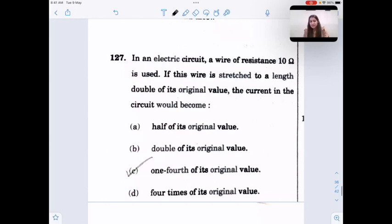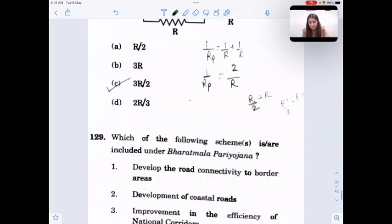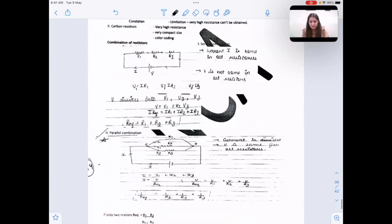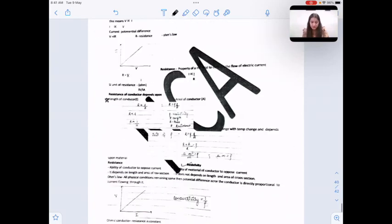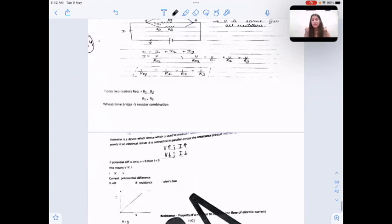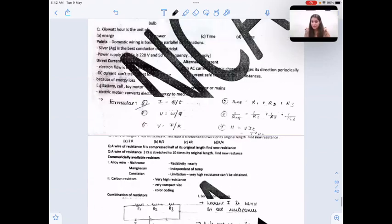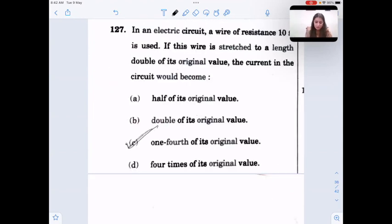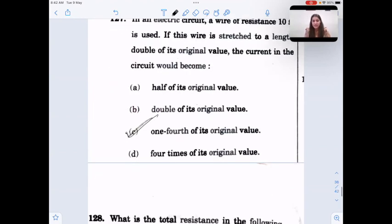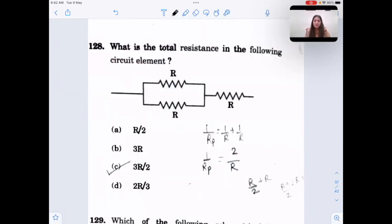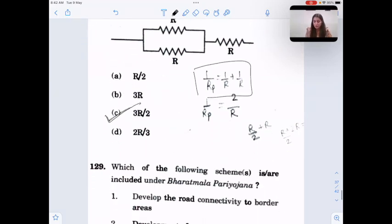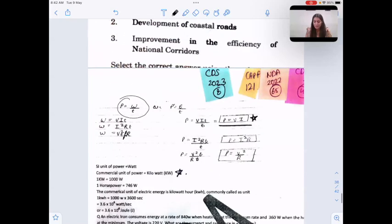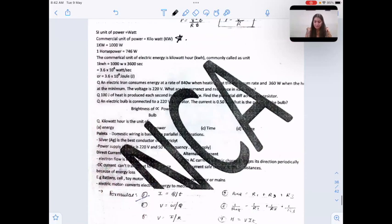We have done many questions of this type. You just need to know this formula: r is equal to rho L by A. You will find new resistance, the new resistance is one fourth of the original value. So the current will decrease by one fourth, one fourth of its original value is the answer. Next is very simple question based on the formula of resistors in parallel combination. So this is the formula, it's three R. So answer is three R by two.